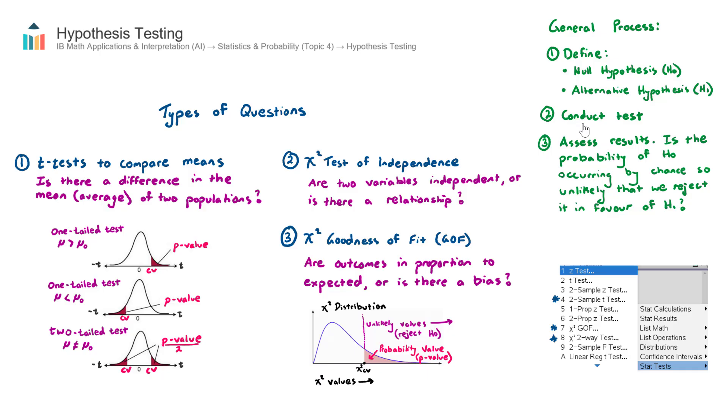Step two is to conduct a test. Now the test varies depending on which type of question we have here. And on our calculator, it can do all three of the tests. So we're either going to use number four, a two-sample t-test. That's for the t-test type.